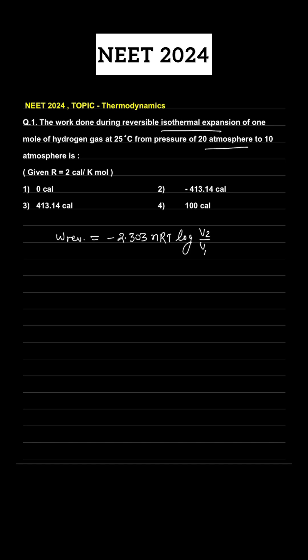In this question, the data is given in terms of pressure. So we can modify this formula in terms of pressure. It is because for an ideal gas in an isothermal process, pressure and volume are inversely proportional. So V₂/V₁ can be changed to P₁/P₂.